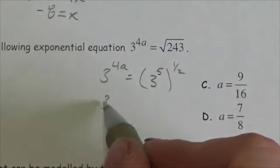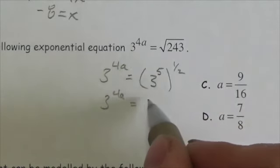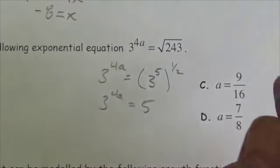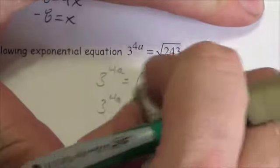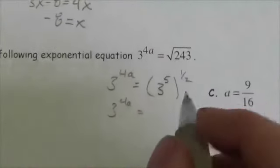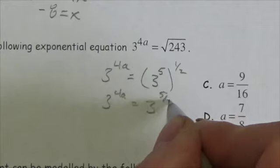So then, once I've got this as a power of a power, I can multiply the exponents. So we will get 3, multiply the exponents here to the 5 halves.